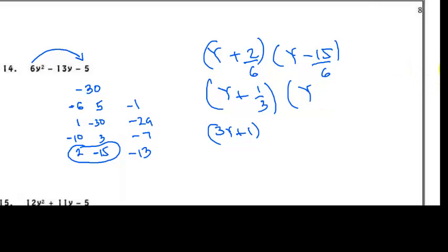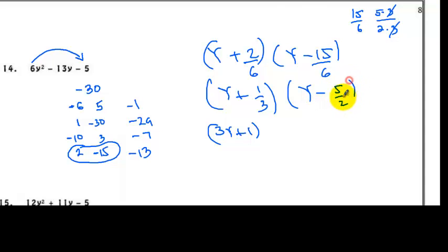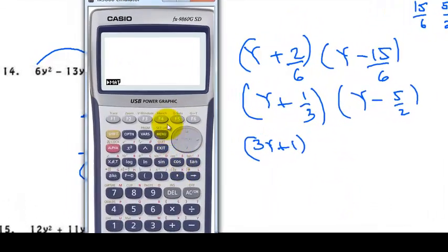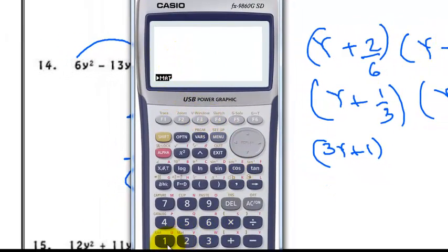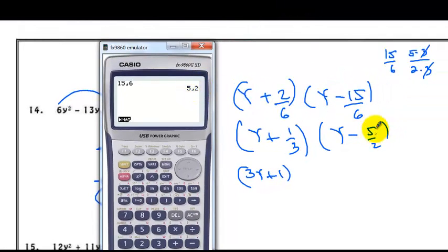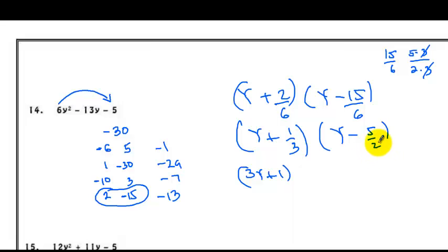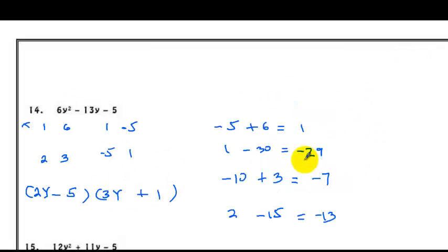15 is 5 times 3, and 6 is 2 times 3, so cancel the 3s. 15 over 6 simplifies to 5 over 2, giving us minus 5 over 2. You can also check using your Casio calculator: type 15, then 6, press EXE, and you get 5 over 2. Since we still have a fraction, slide the 2 beside y, giving 2y minus 5. Comparing with the previous method, we got the same answer: 2y minus 5, 3y plus 1.